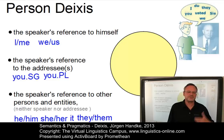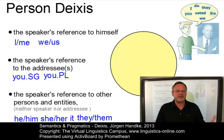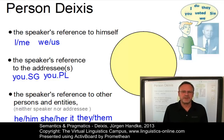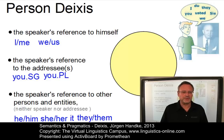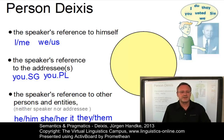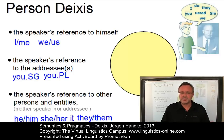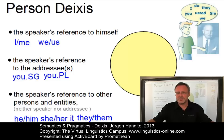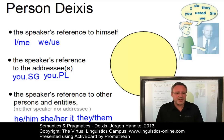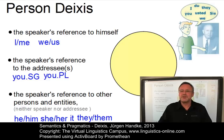Person deixis depends on the speaker as the deictic centre. When the speaker switches, so does the reference point. For example, if someone called Linda is the speaker, then 'I' — the first person singular — refers to her. And if Paul is the current speaker, then 'I' is the person deixis element relating to him, and so on.